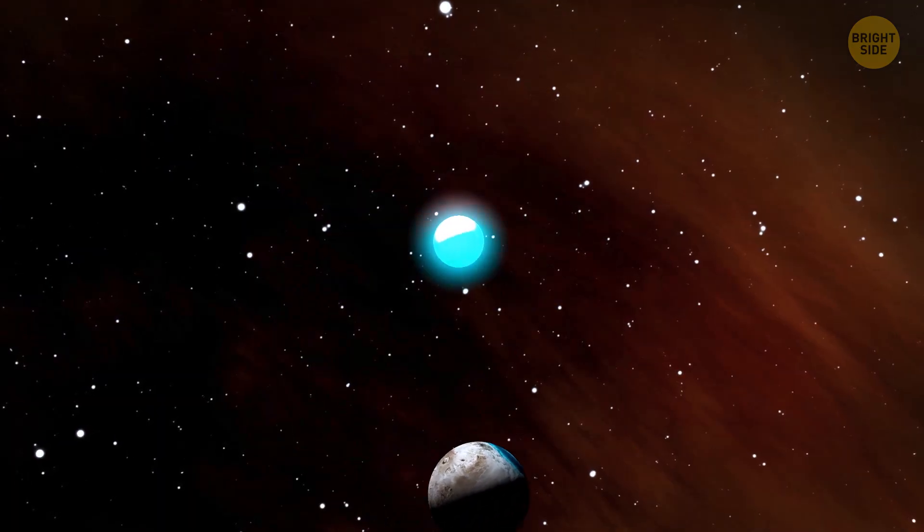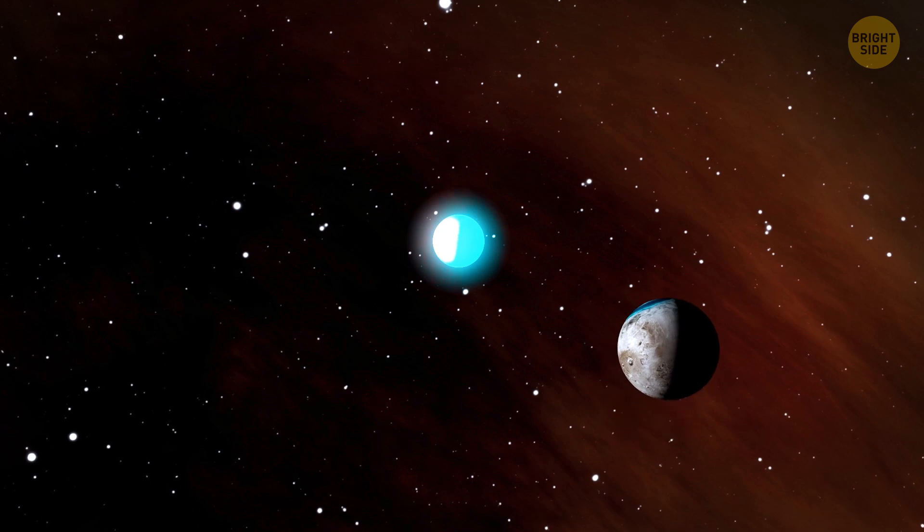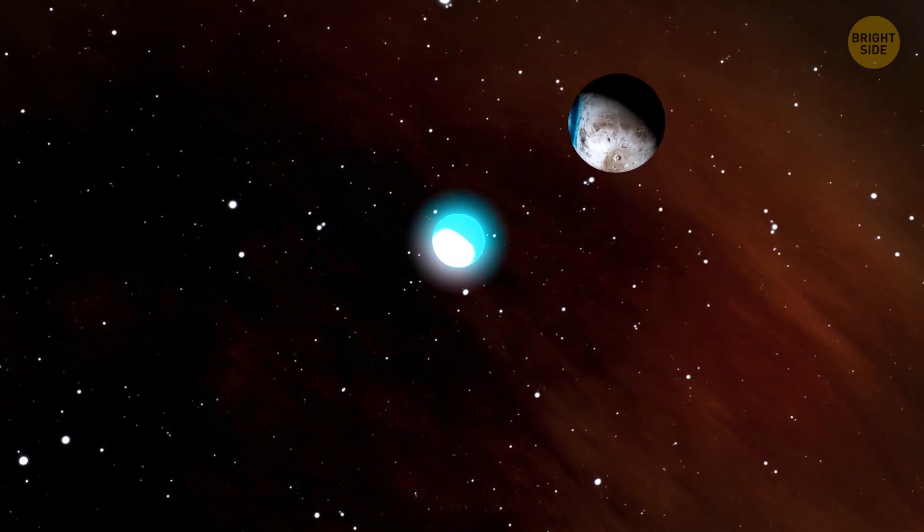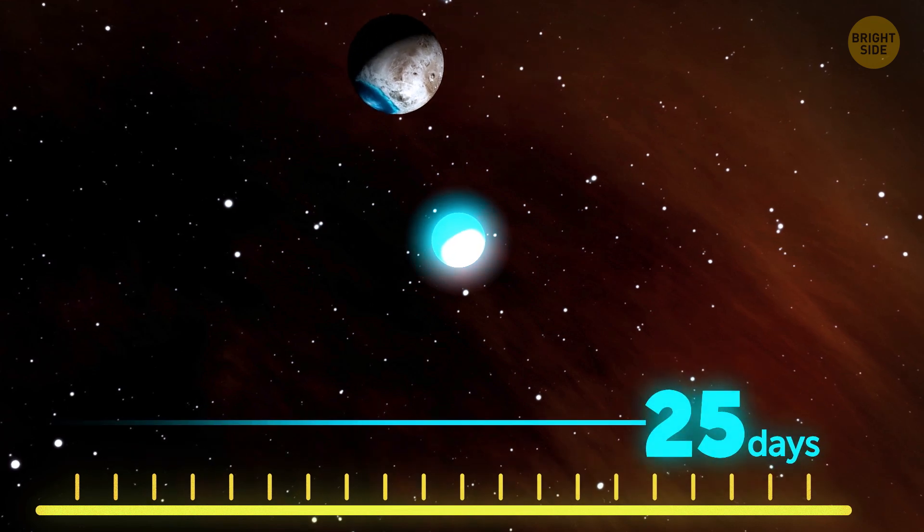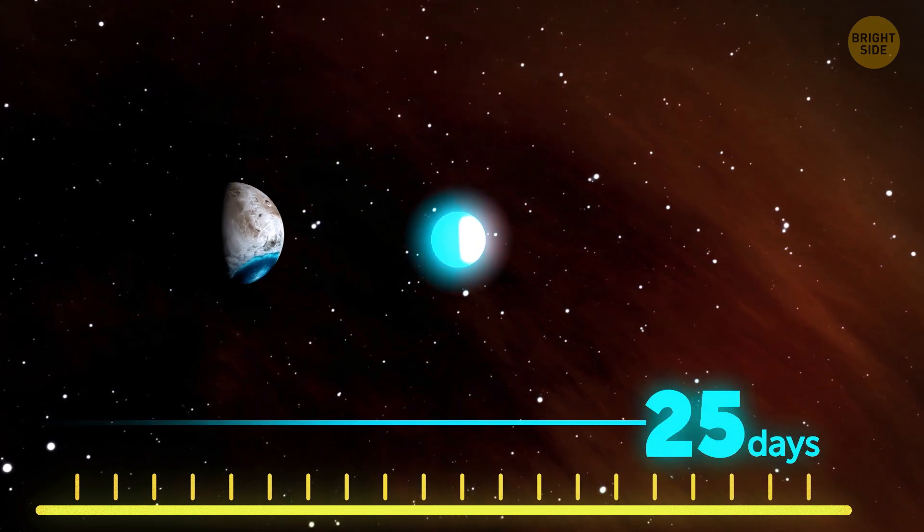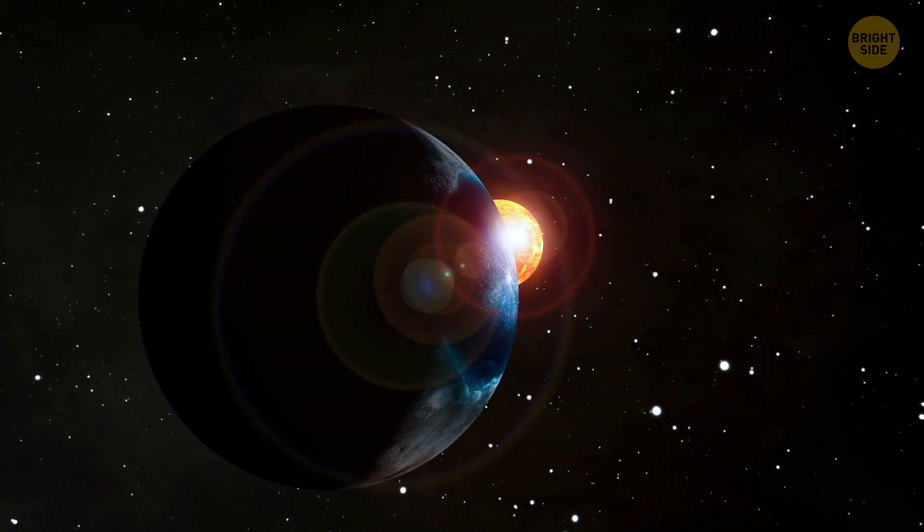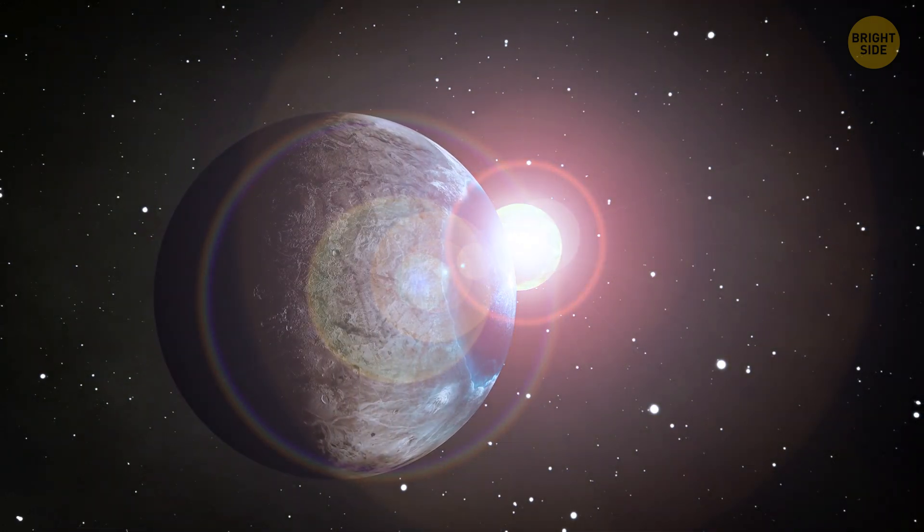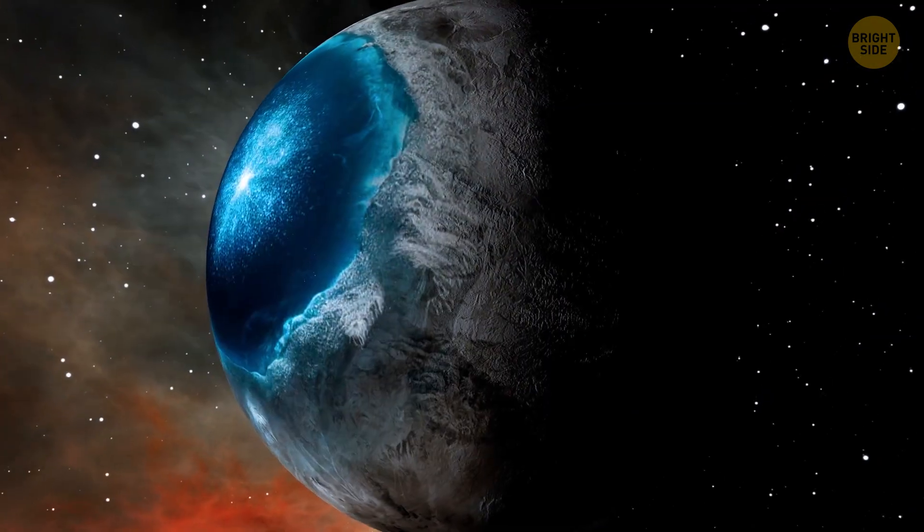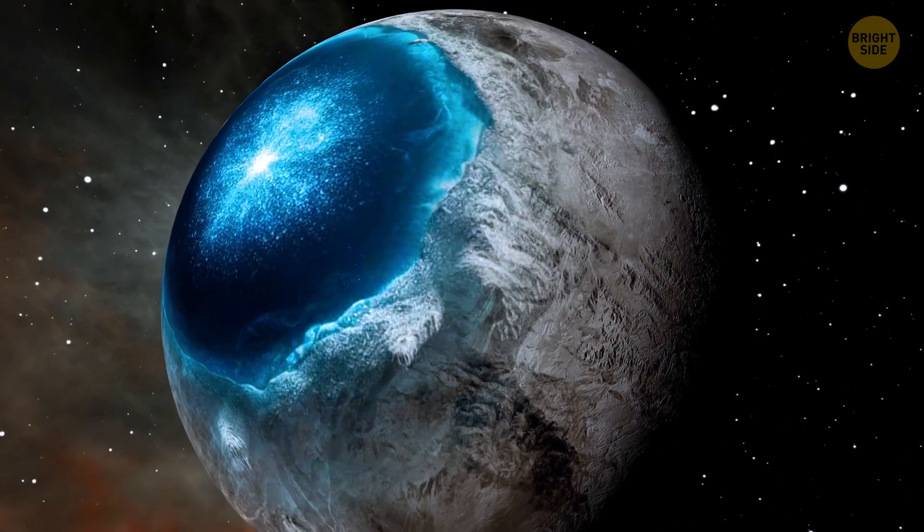The giant eyeball planet orbits much more closely to its star than Earth does. It needs just around 25 days to complete an entire orbit. If the star were similar to our Sun, such a distance would definitely be too close for life to appear on the planet. But instead, it's a cool and dim red dwarf.